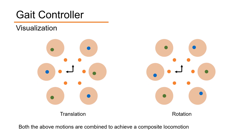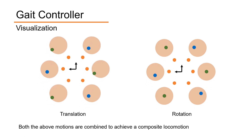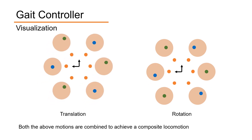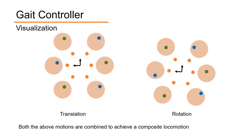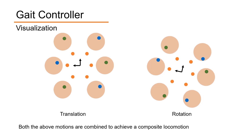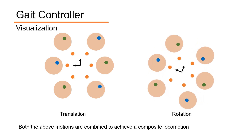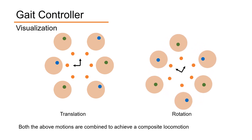Here's a quick visualization on how the controller would react to a pure translation and pure rotation. We can combine both to achieve a composite motion.